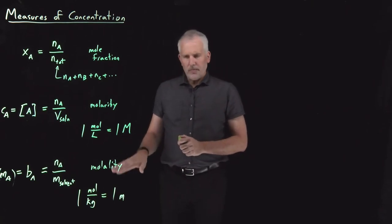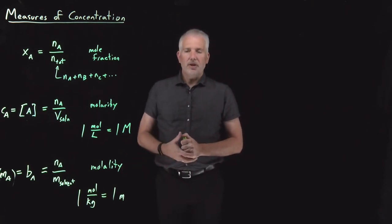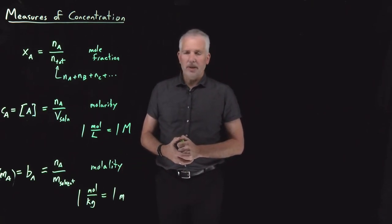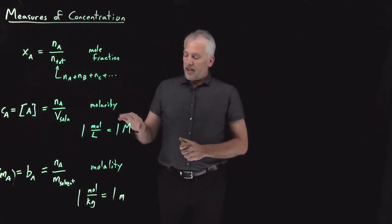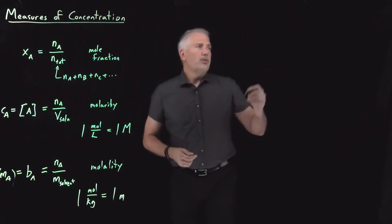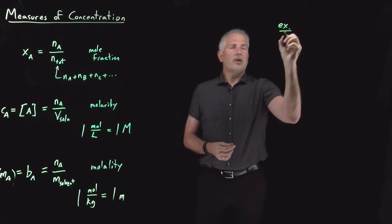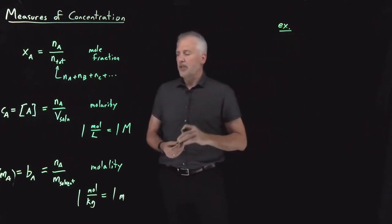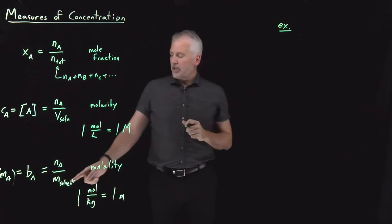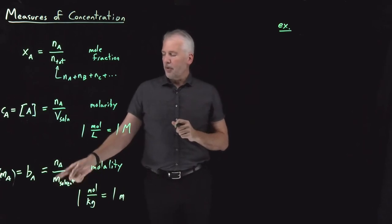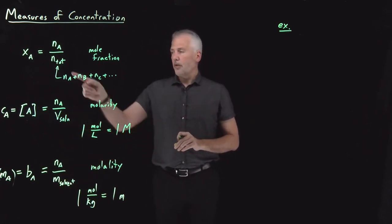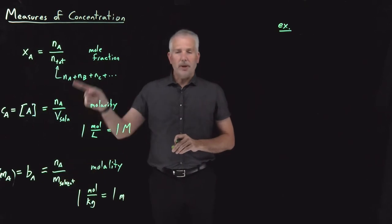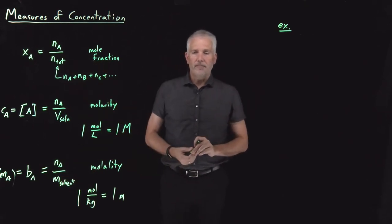There are many other measures of concentration, but these are the most common in physical chemistry. We'll frequently need to convert back and forth between them. That's always possible, though you may sometimes need extra information — for example, a density to convert between mass and volume, or a molar mass to convert between moles and mass.